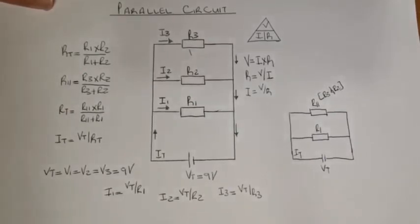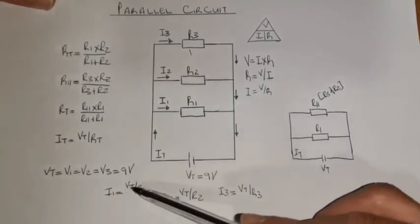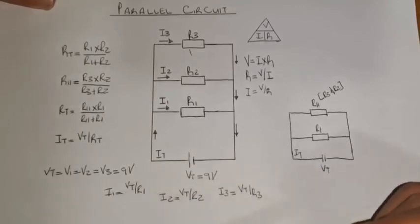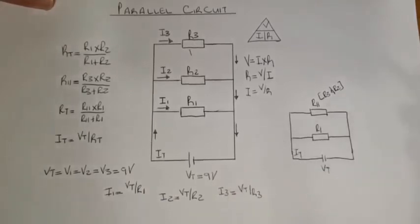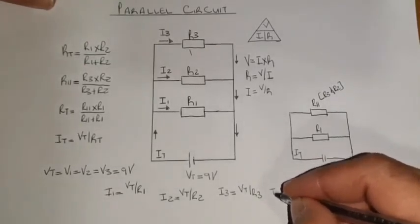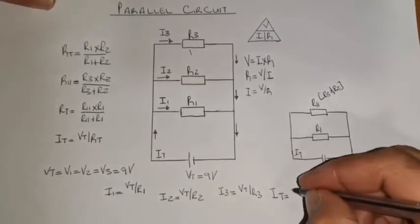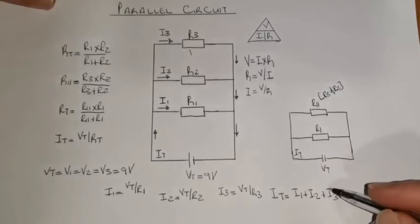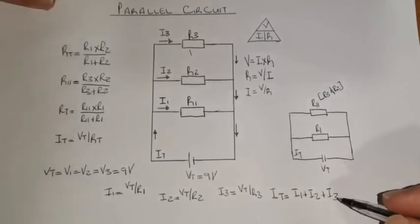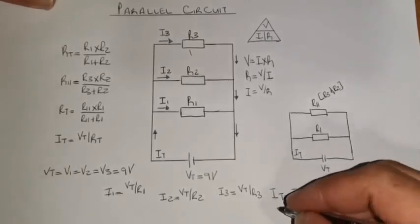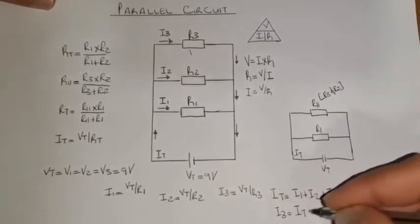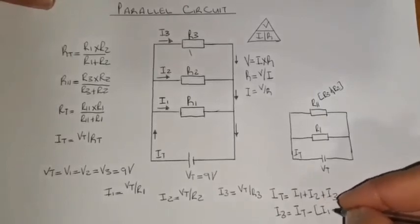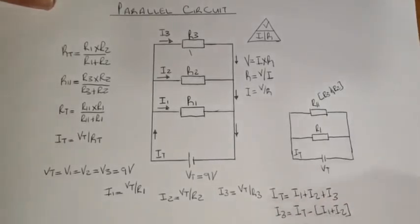Now, the other thing you can also do is — when you have calculated two of these currents — you can use Kirchhoff's current law to calculate the third one. I total equals I1 plus I2 plus I3. If you're looking for I3, you make I3 the subject: I3 equals I total minus the sum of I1 plus I2. And then you can calculate I3 using Kirchhoff's current law.